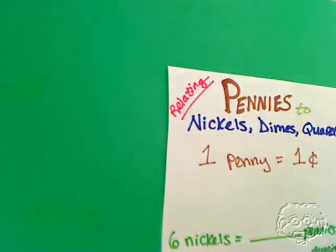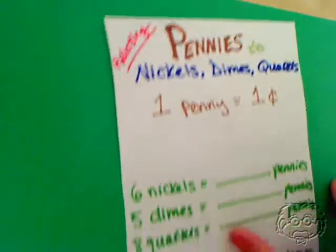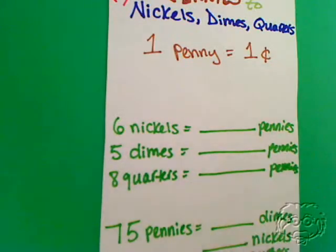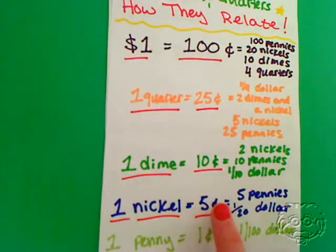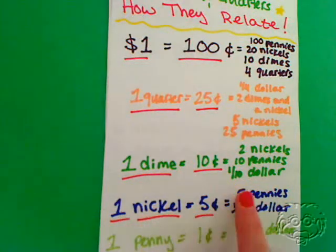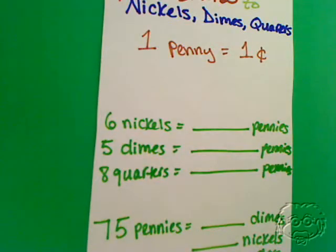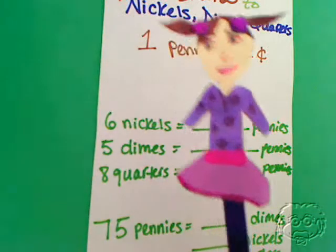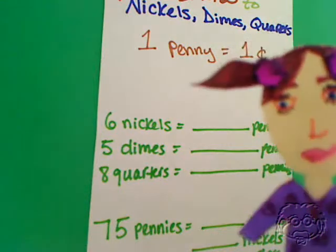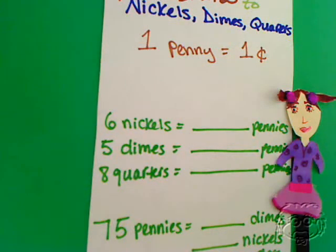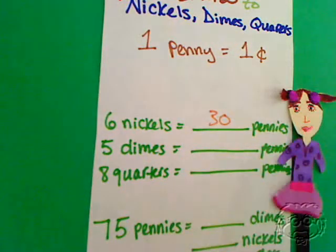1 penny is equal to 1 cent. So, how many pennies are in 6 nickels? Let's check out that cheat sheet, starting with nickels. A nickel is worth 5 cents, or 5 pennies. So if 1 nickel is equal to 5 pennies, how many pennies is 6 nickels equal to? We can multiply by 5 — 6 times 5 is 30. So 6 nickels is equal to 30 pennies, or 30 cents.